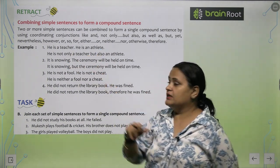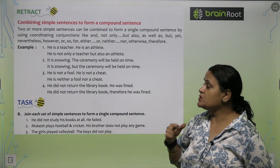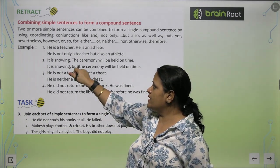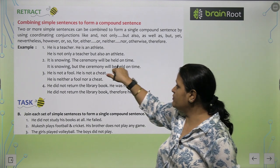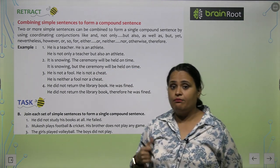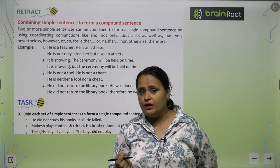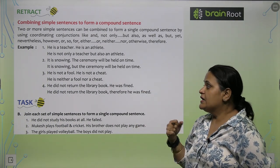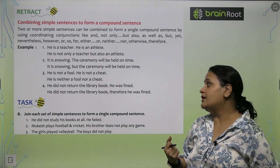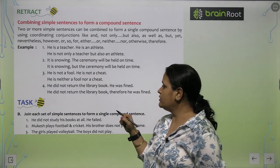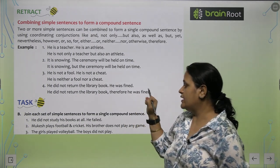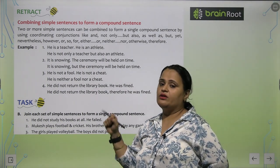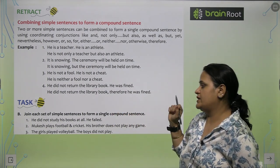'He is a teacher. He is an athlete.' Combined: 'He is not only a teacher but also an athlete.' 'He is not a fool. He is not a cheat.' Combined: 'He is neither a fool nor a cheat.' 'He did not return the library book. He was fined.' Combined: 'He did not return the library book, therefore he was fined.'